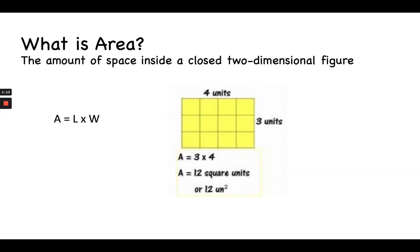Area is the amount of space inside a closed two-dimensional figure. So if you're thinking about vacuuming carpets or mowing a lawn, you are focused more on the area and not the perimeter, because it's the space inside that figure. You can see here the area is length times width. The length would be 4, the width would be 3, so 4 times 3 gives us 12. And in this particular figure, I can count the squares as well to help me check my answer.